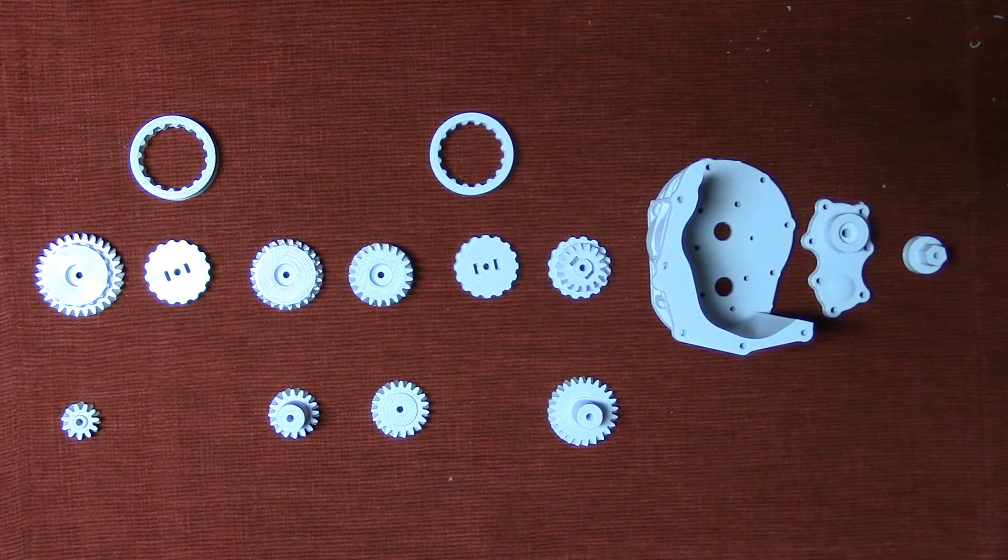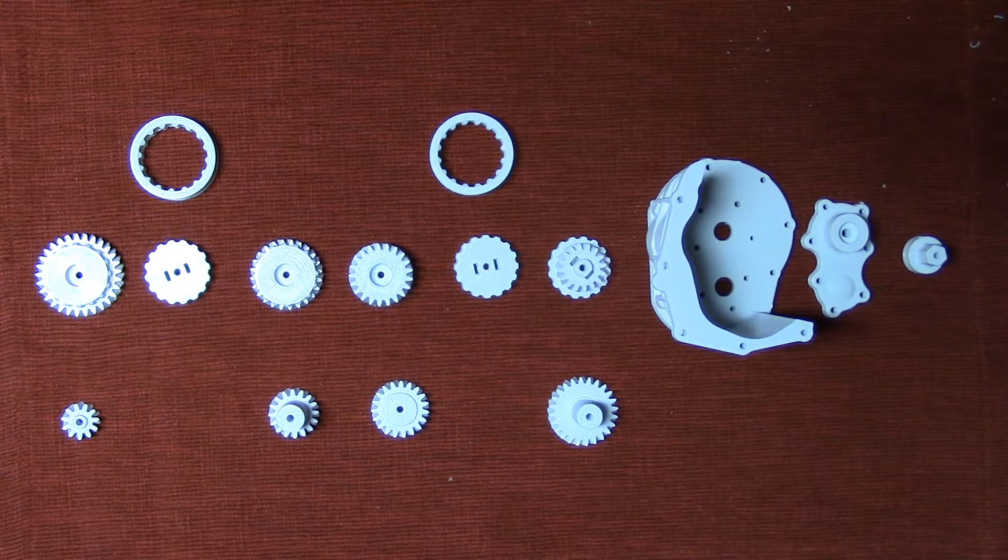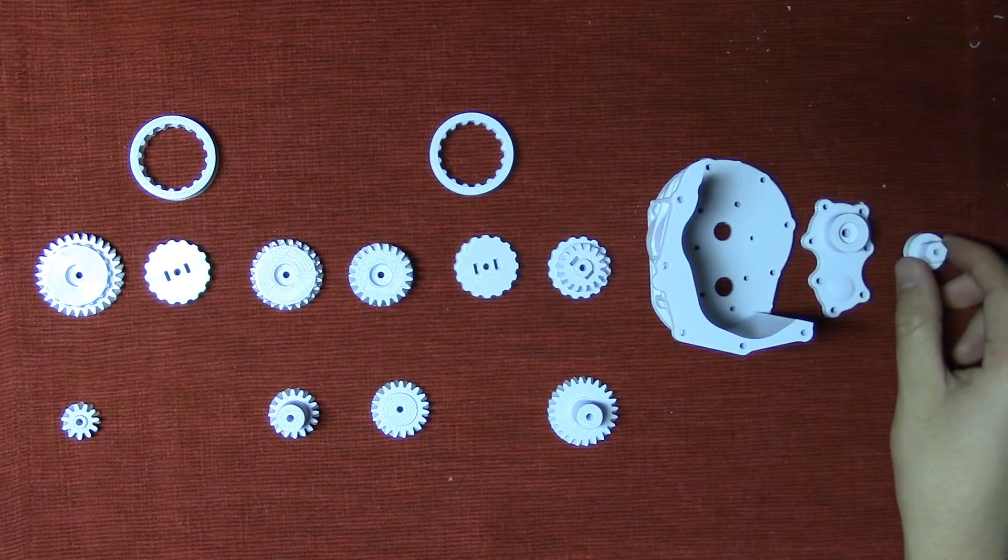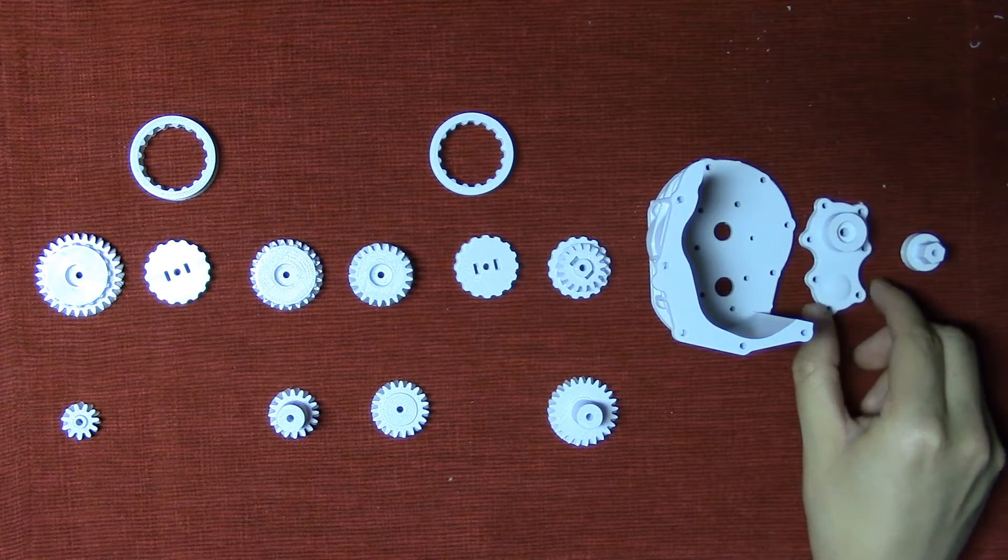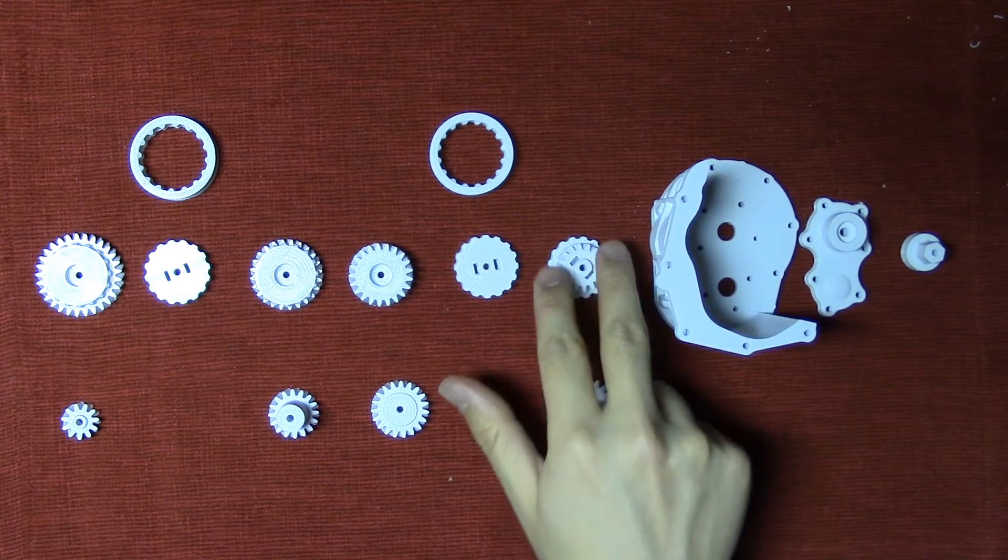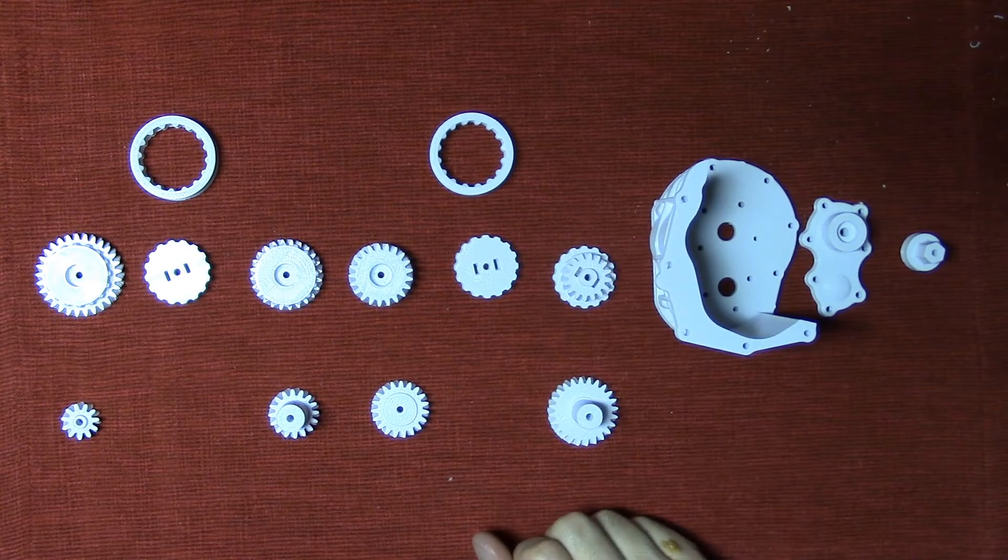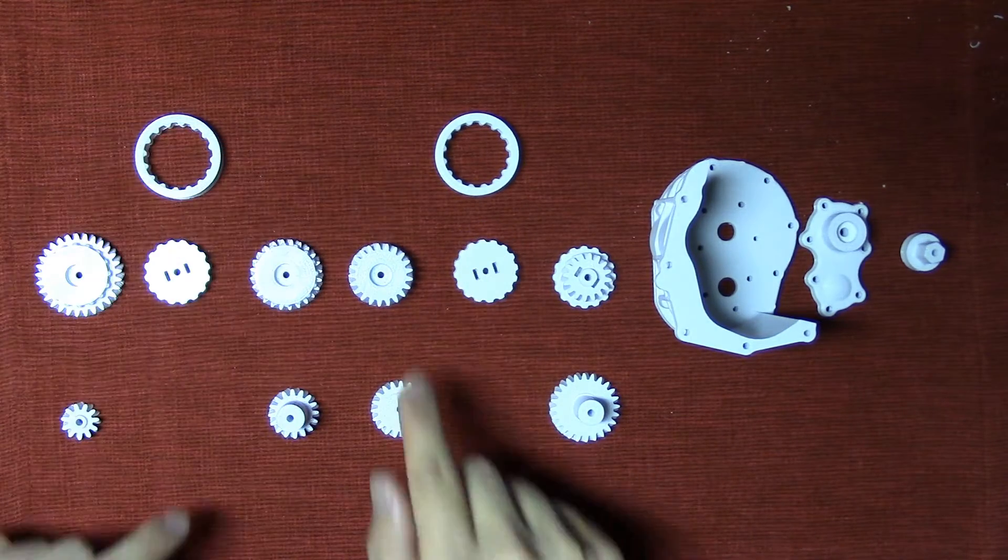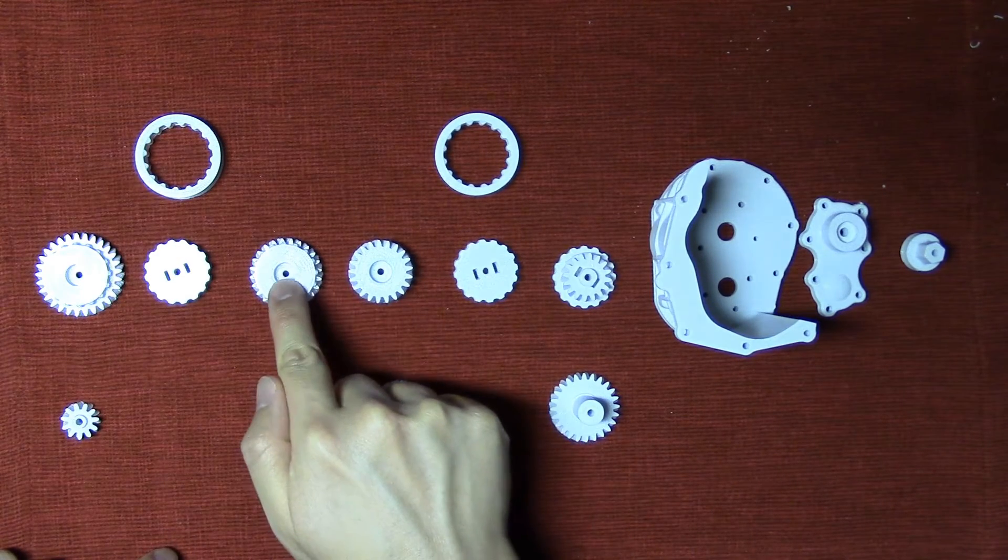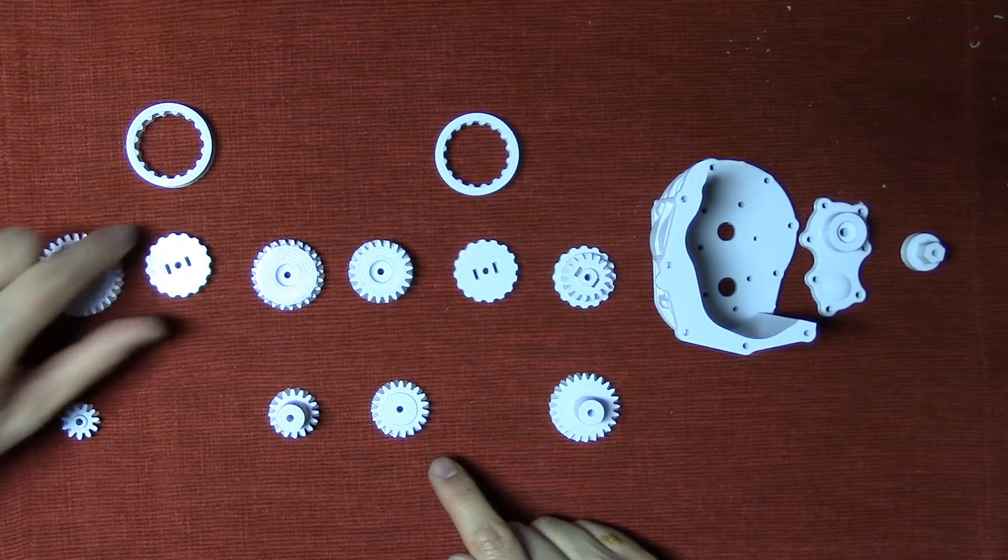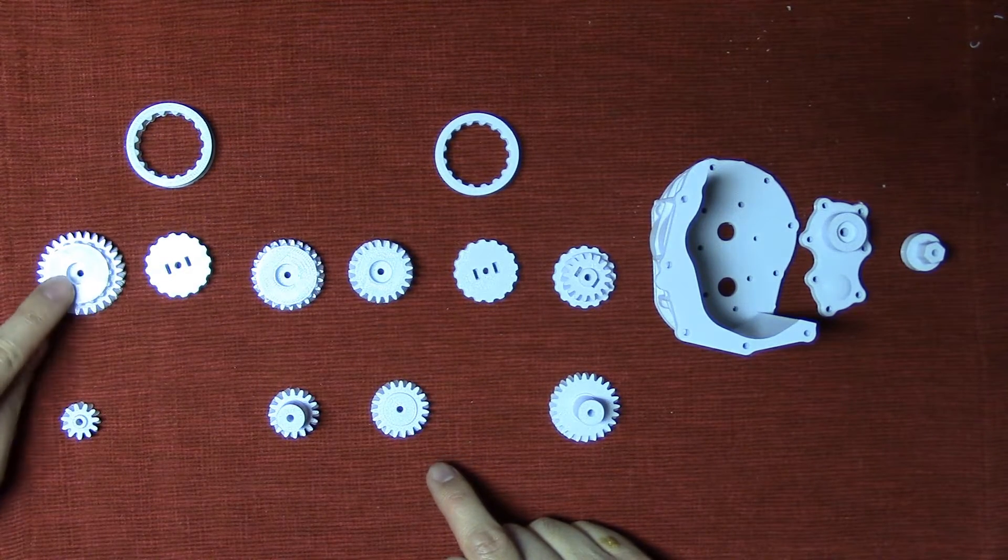First, make sure to print out all the parts necessary for Section 1. From the right hand side, we've got the input shaft, front bearing retainer, transmission housing 1, gear 1 top, the first set of shift collar and shift collar gear, gear 2 top, gear 3 top, the second set of shift collar and shift collar gear, and finally gear 4 top.